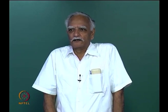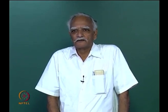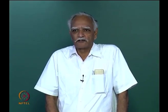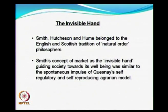In the last class, we have seen two mid 18th century versions of the natural order thesis. We have seen the physiocrats and we have seen the Italians too. We shall proceed to do Adam Smith today. Adam Smith, as you know, was a Scotsman and they followed this Scottish English tradition of looking at natural order.